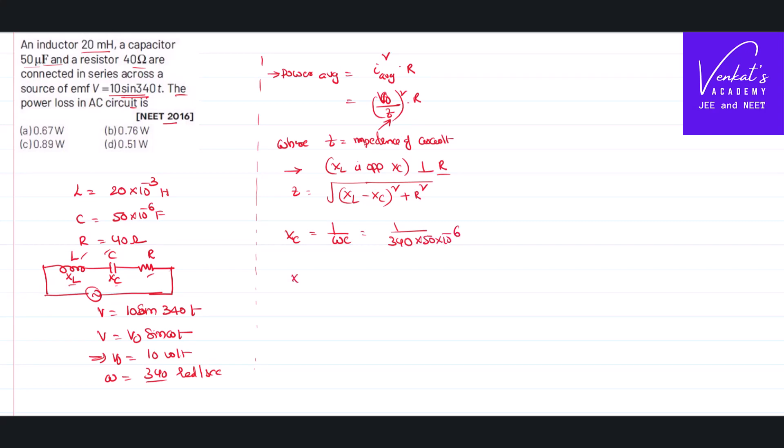X_L equals ωL, that is 340 × 20 × 10^-3. Resistance R is 40 ohms. Substitute all of them in the equation, and I will get the value of Z.